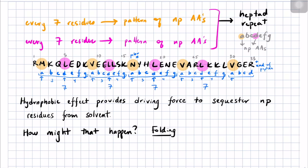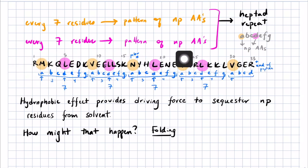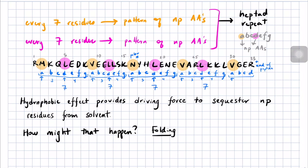Hello again folks, this is lecture 33 part 4 of chapter 26. We're picking up where we left off last time. We had talked about this sequence of amino acids listed from N-terminus to C-terminus, and we had noted that the sequence consists of two overlapping patterns of nonpolar amino acids.